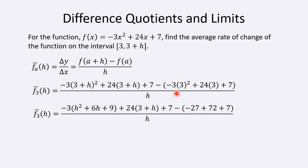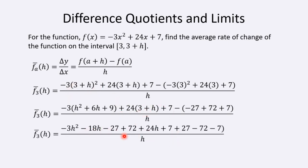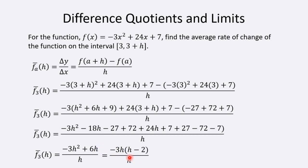Now let's simplify. The f(3) terms give -27 + 72 + 7. We foil (3 + h)² = (3 + h)(3 + h), then distribute everything. After distributing and combining like terms, a bunch of terms cancel and we're left with an expression where both remaining terms have a factor of -3h. Factoring out -3h gives -3(h - 2), and then the h's cancel. So -3(x - 2) — written as -3(h - 2) — is the slope of the secant line, the average rate of change on the interval from 3 to 3 + h.